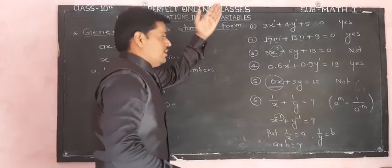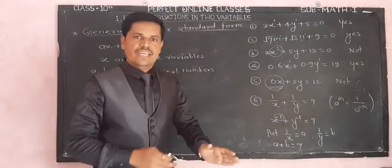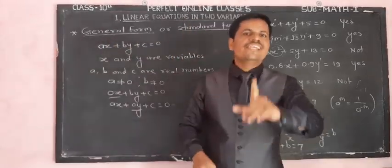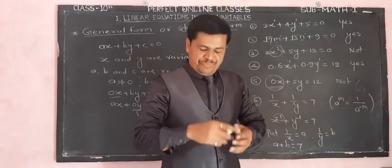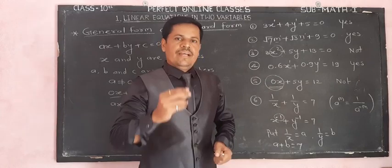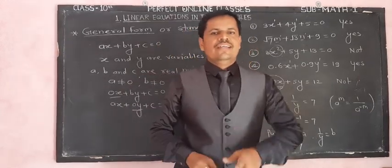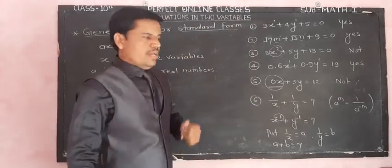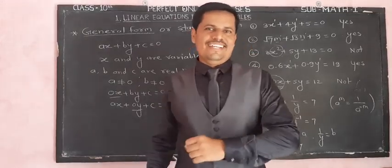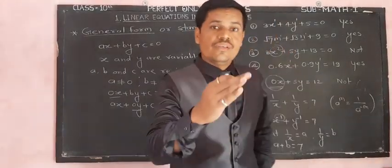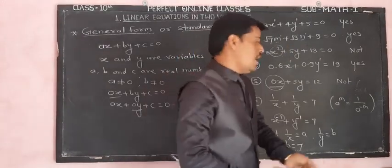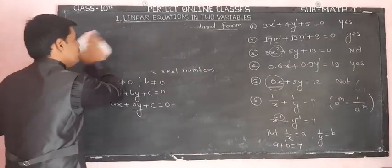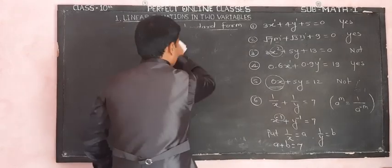Now we look at simultaneous equations. When we take two linear equations in two variables together, they are called simultaneous equations. There are three methods of solving simultaneous equations. In this standard we see the first method, which is called the elimination method.